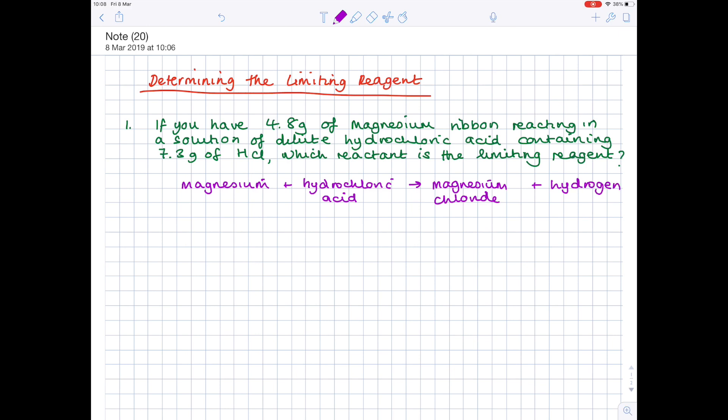Convert it to a balanced symbol equation now. Using your periodic table, magnesium is Mg, hydrochloric acid is HCl. Magnesium chloride, if I show you on the left-hand side the ions, Mg2+ Cl-, then we can see that the formula of magnesium chloride would be MgCl2. And lastly, hydrogen is diatomic, which is why I'm writing H2.